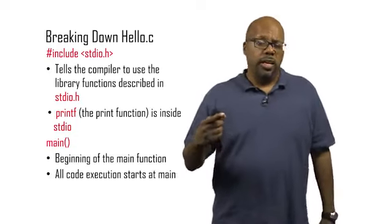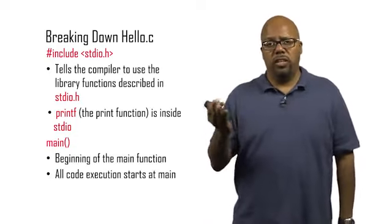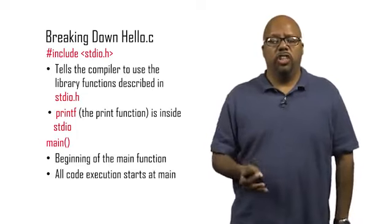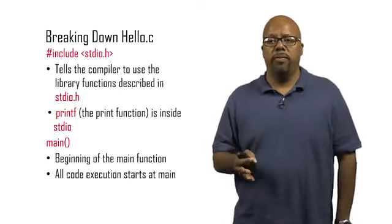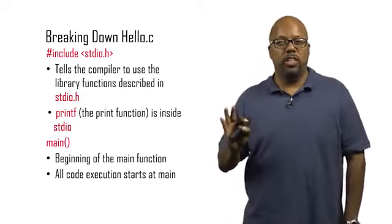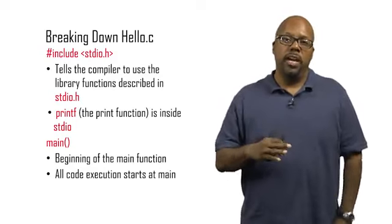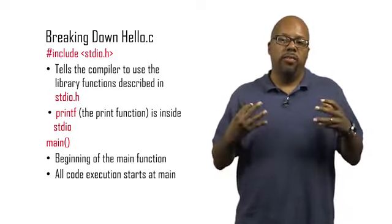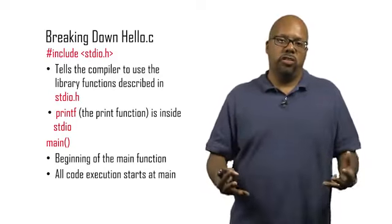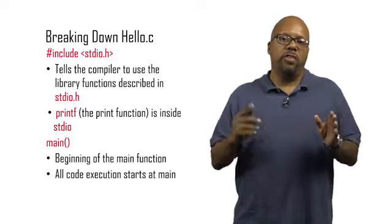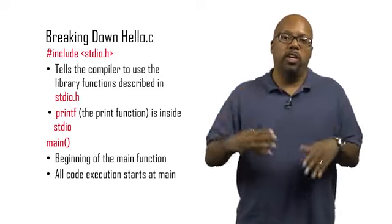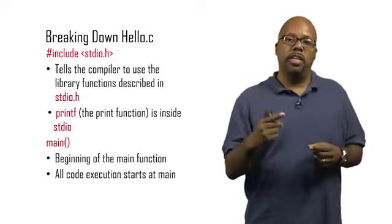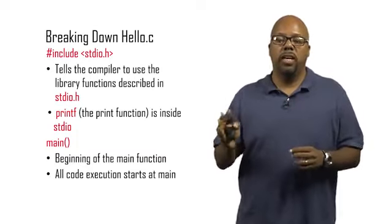Now, inside the program, after we've done the include, you have the main function. So there's a function defined called main. We'll talk in more detail about functions later. But the main function starts off with this main open parenthesis, closed parenthesis. This is where all the execution starts. So when it sees that main, it says okay, this is where I want to start running my code. When it's time to run the code, I go to the beginning of the main and run from there.